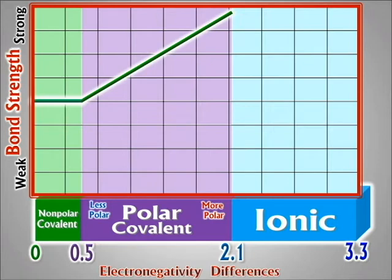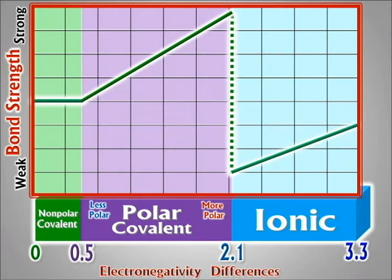But right at the 2.1 line, the bond strength drops off a cliff. This happens because now we're generating ions. When the electronegativity difference is so great that one atom can steal an electron from its neighbor, you no longer get a tight bond. You get two separated ions sticking together on their outsides — separated by much more than any covalent bond. That is why ionic bonds are always weaker than covalent bonds individually.